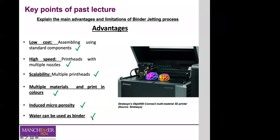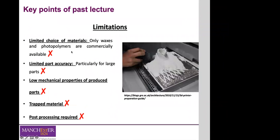Also, depending on the materials used, it is possible to create a more sustainable process by using water as a binder. In terms of limitations, the choice of materials is commercially limited — mainly waxes and photopolymers. There is also limited powder security, particularly for continuous stream systems due to how particles are directed onto the substrate. Mechanical properties are also limited compared to powder bed fusion or FDM.